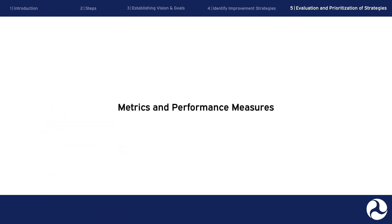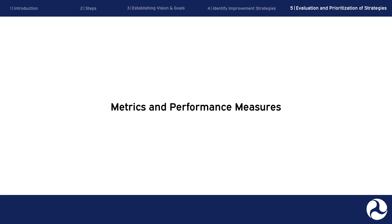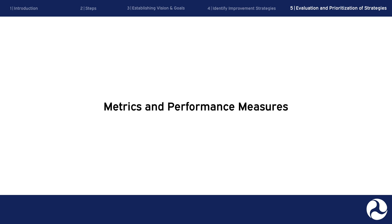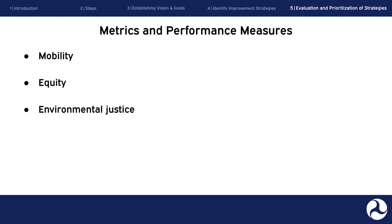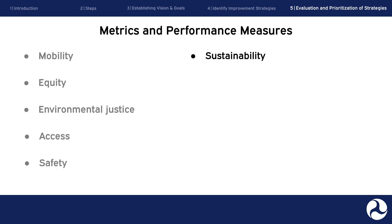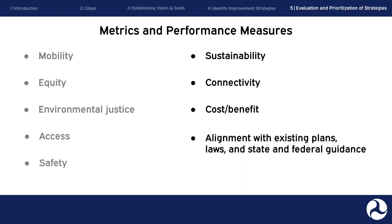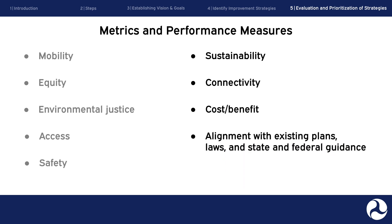To answer those questions, you will evaluate the strategies via a defined set of metrics and performance measures. These metrics will vary across locations and agencies, but commonly include mobility, equity, environmental justice, access, safety, sustainability, connectivity, cost-benefit, or alignment with existing plans, laws, and state and federal guidance.